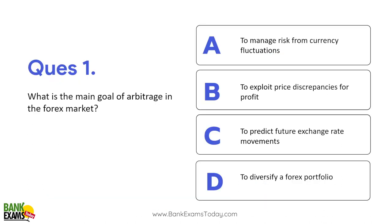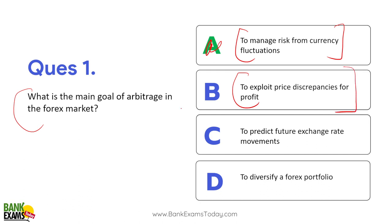Let's do some questions. What is the main goal of arbitrage in the forex market? Option: to manage risk from currency fluctuations — that's not the answer. The correct answer is B: to exploit price discrepancies for profits, just like the apples example.